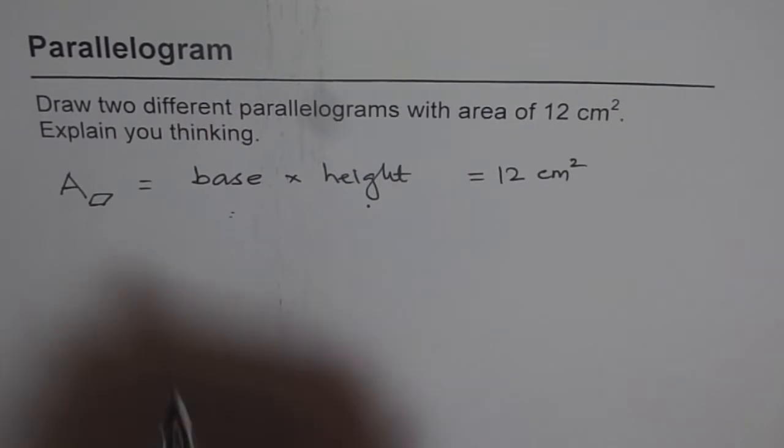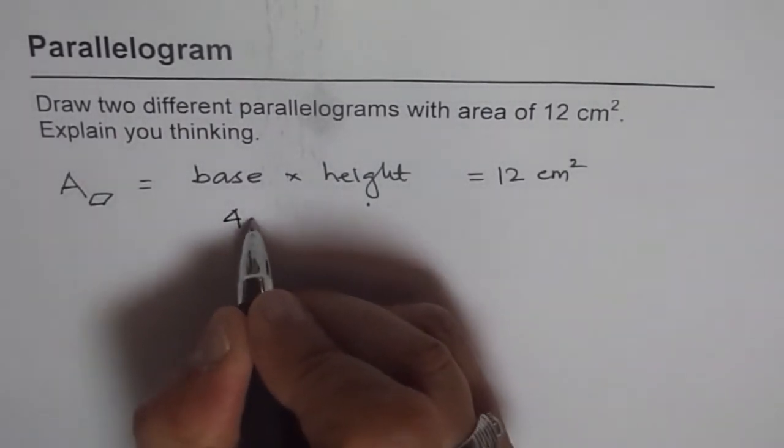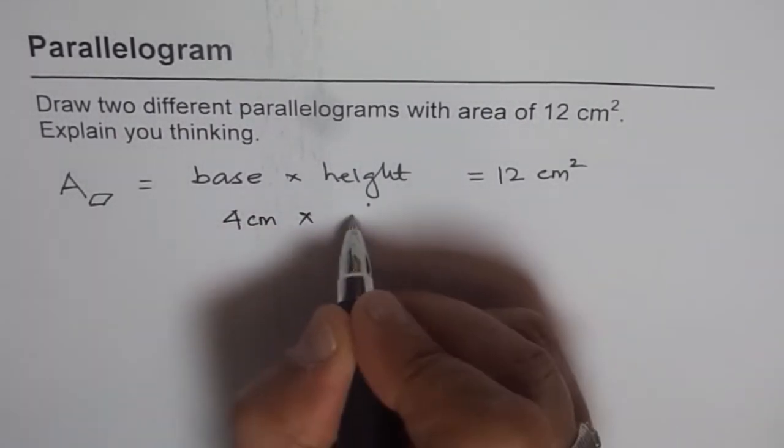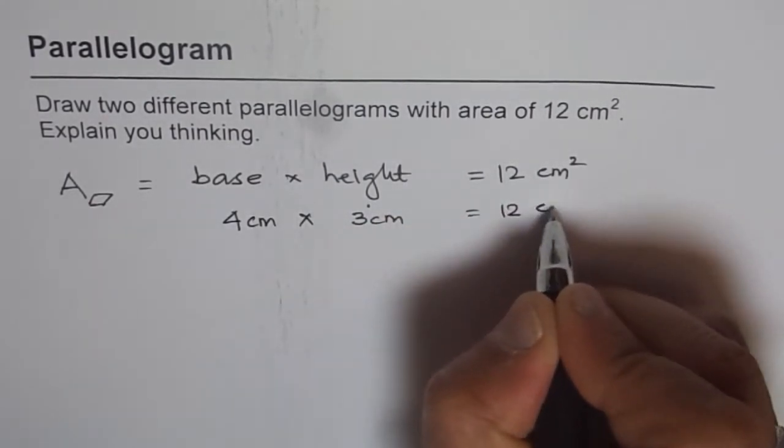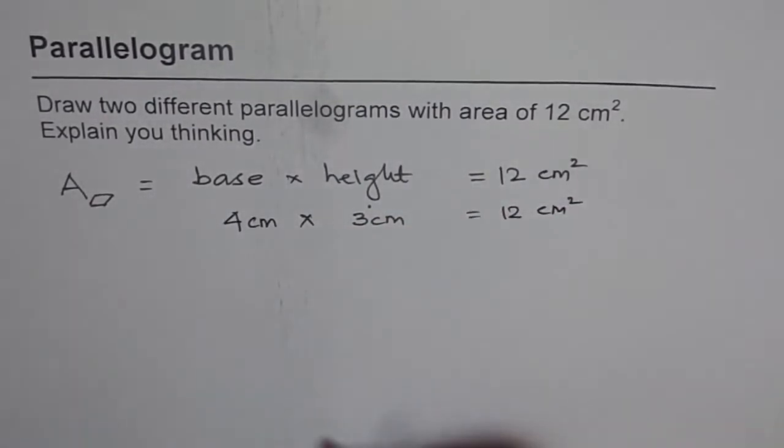For example, I can have base of 4 cm, right? And multiply by height of 3 cm, that will give me 12 cm², correct? Yes, it should.